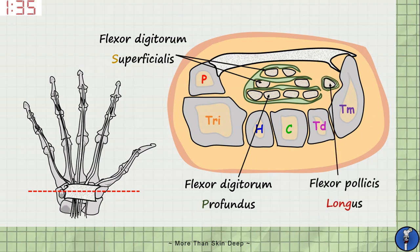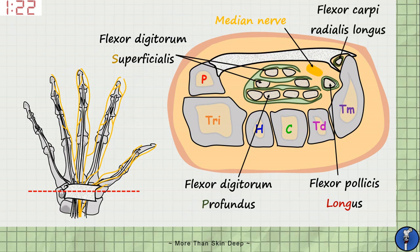Next we'll add in the flexor pollicis longus tendon on the lateral side. And finally we have the median nerve, which passes through the carpal tunnel very superficially. An important structure to note is the tendon of flexor carpi radialis longus, which passes within the fibres of the flexor retinaculum, but does not actually pass through the carpal tunnel.